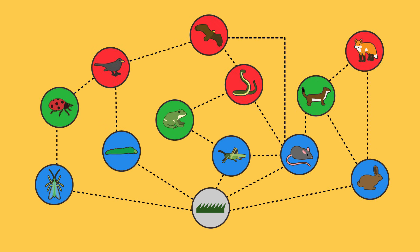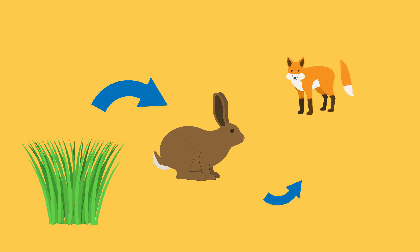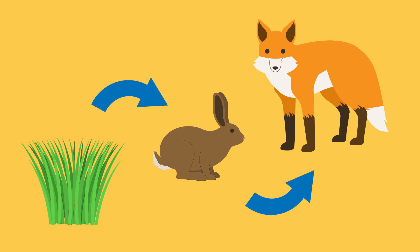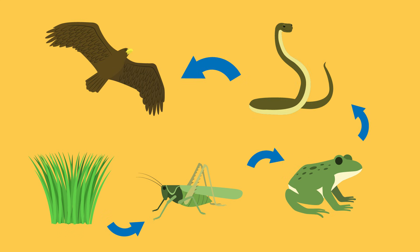In our woodland one food chain would be grass at the bottom which is eaten by the rabbits which are then eaten by the foxes. The arrows represent the energy flow through the chain and there are lots of other food chains within the woodland such as this one.